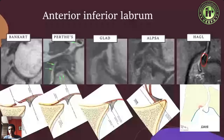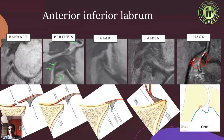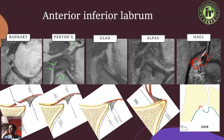Last but not least is the HAGL lesion — humeral avulsion of glenohumeral ligament — where instead of the glenoid side, you have a rupture of the capsule on the humeral side. Some people say the best way to see this is with an arthrogram, but with good high-resolution MRI you can see all of these lesions. Even with an arthrogram and an intact capsule there can be pericapsular leakage of contrast, so you have to be careful about that situation.